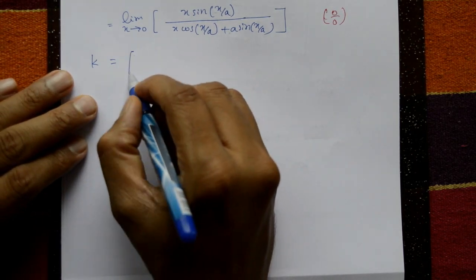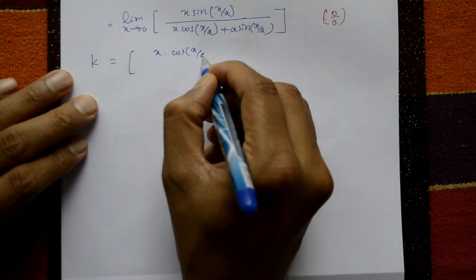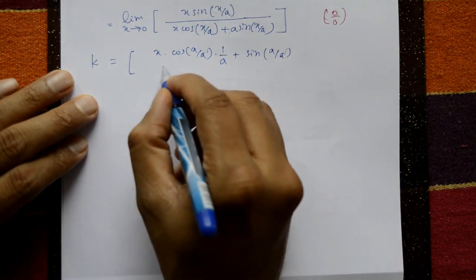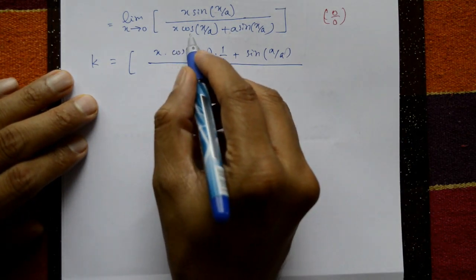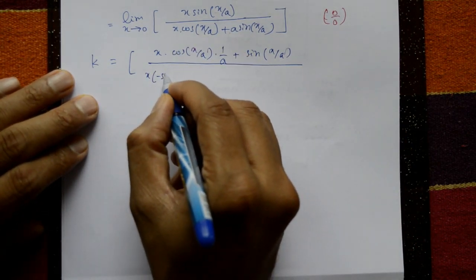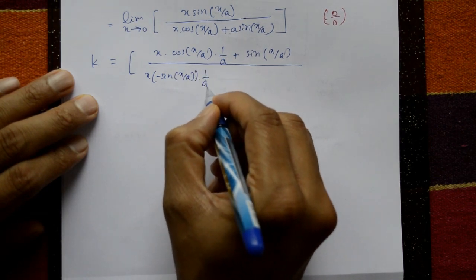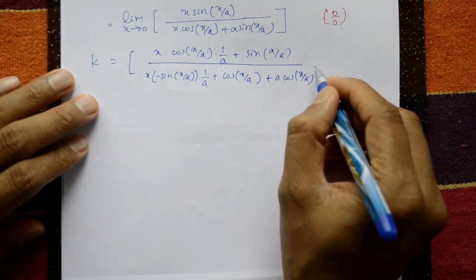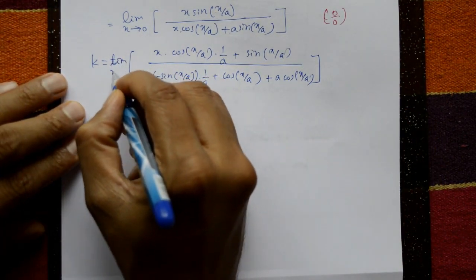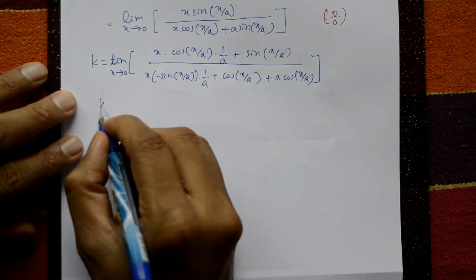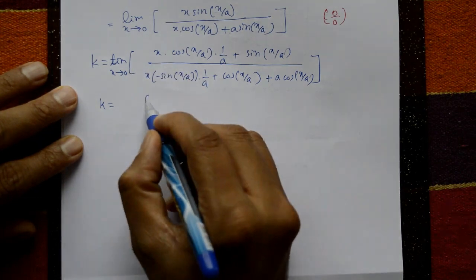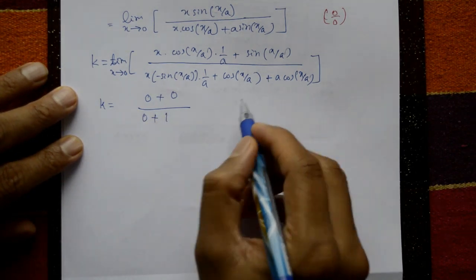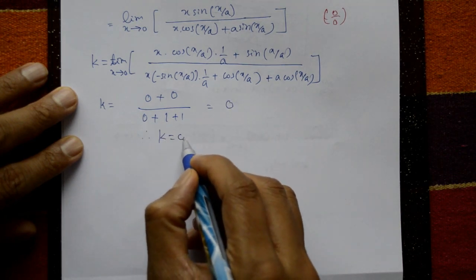Differentiating again: numerator uses product rule on x·sin(x/a), giving sin(x/a) + x·cos(x/a)·(1/a). Denominator differentiates: -x·sin(x/a)·(1/a) + cos(x/a) + a·cos(x/a). Taking limit x tends to 0: numerator = sin 0 = 0, denominator = cos 0 + cos 0 = 1 + 1 = 2. Wait — sin 0 = 0, so k = 0. Therefore k = 0 is the required solution.